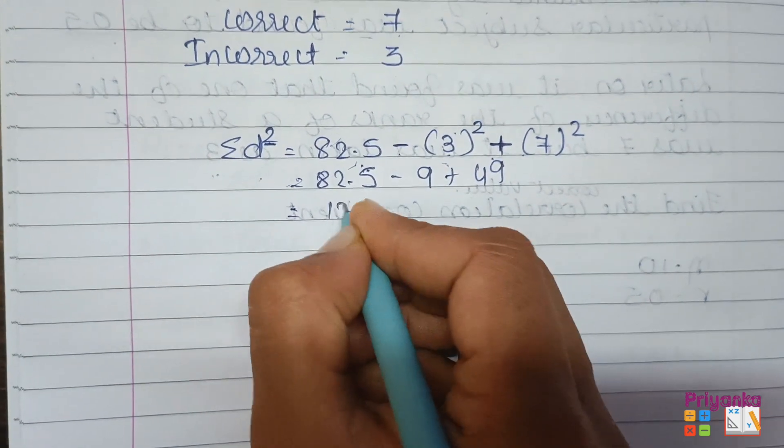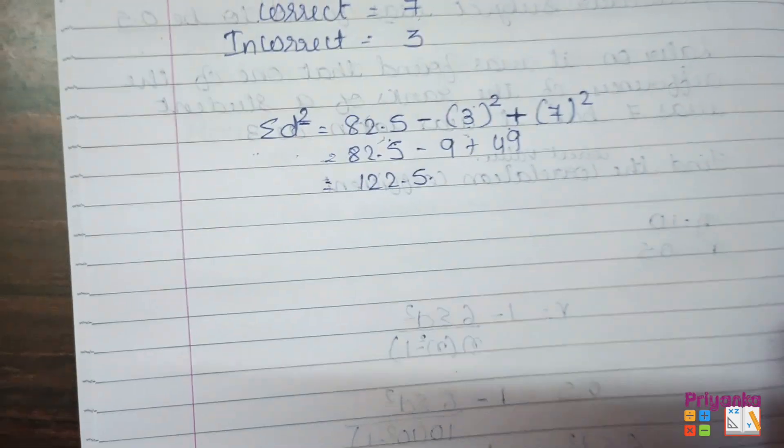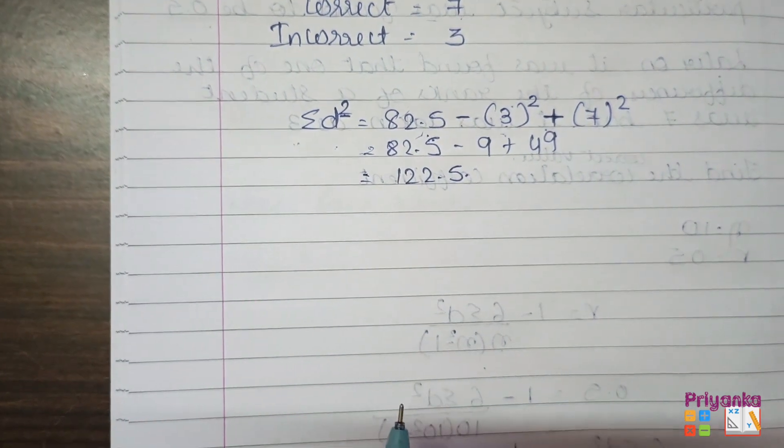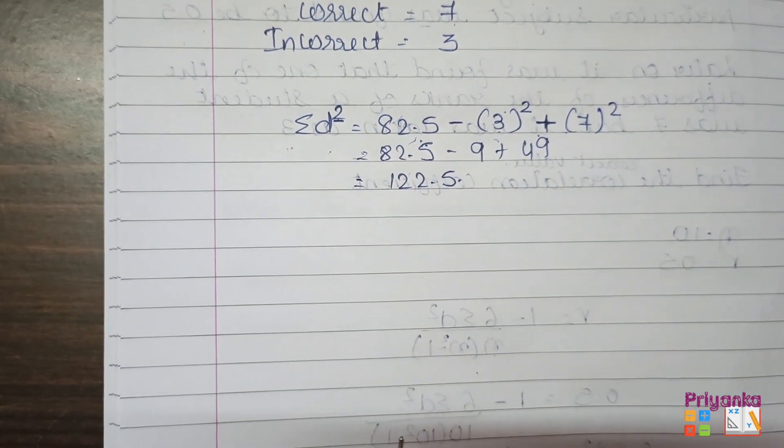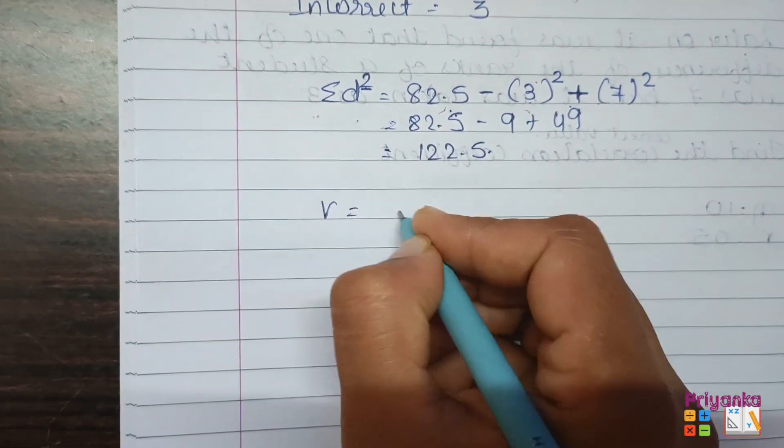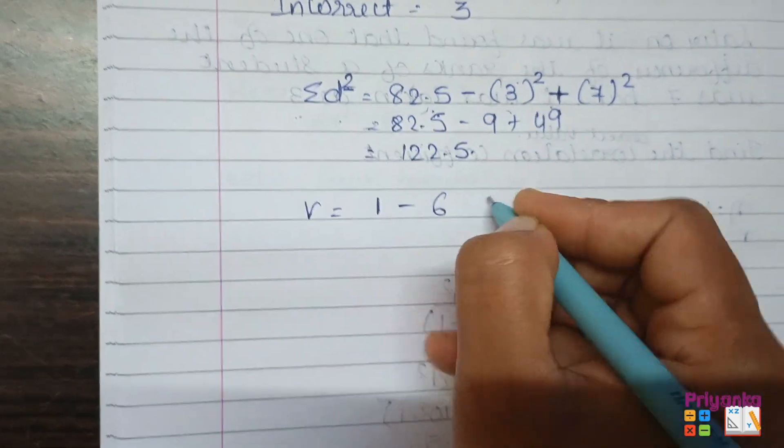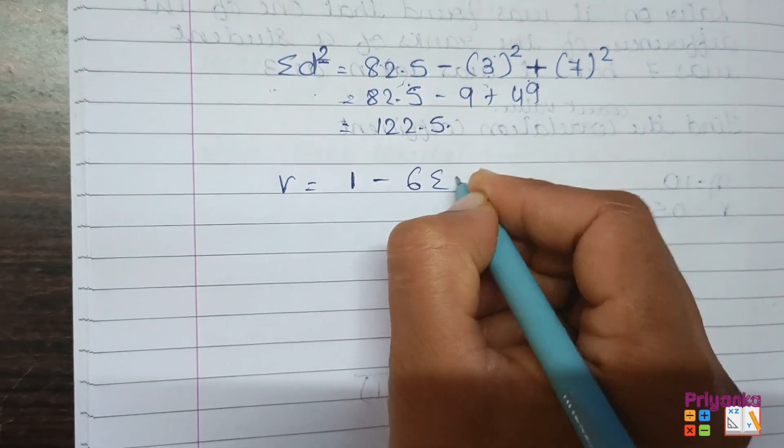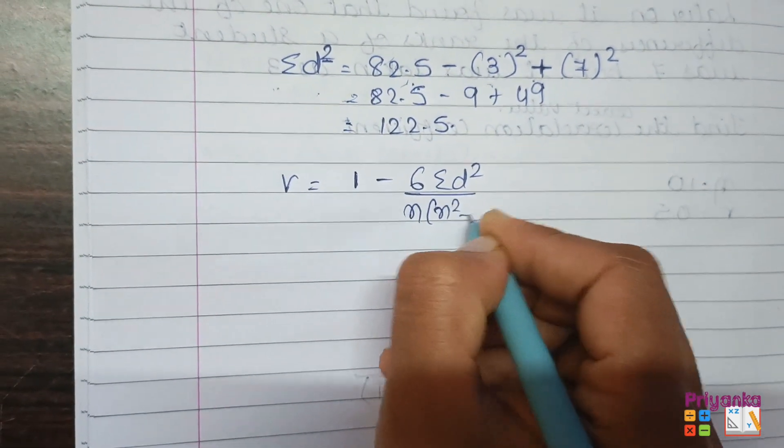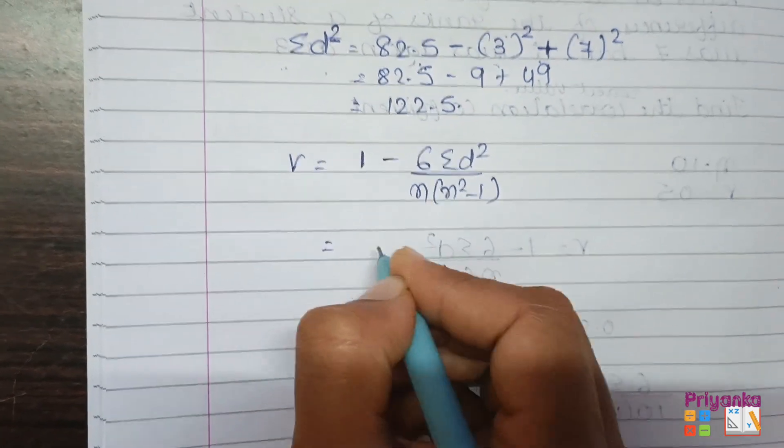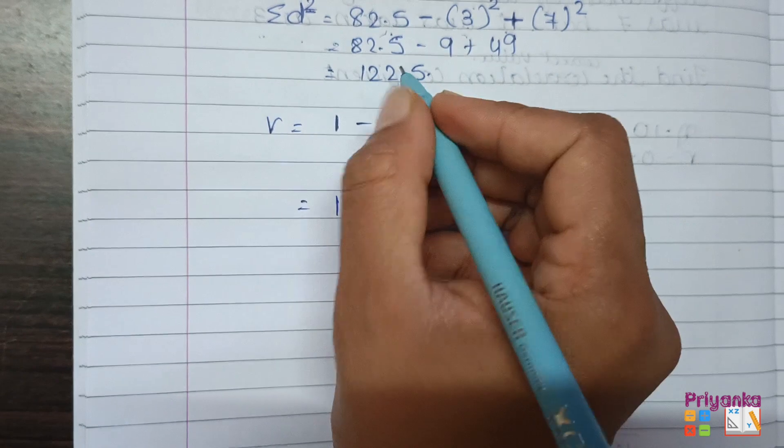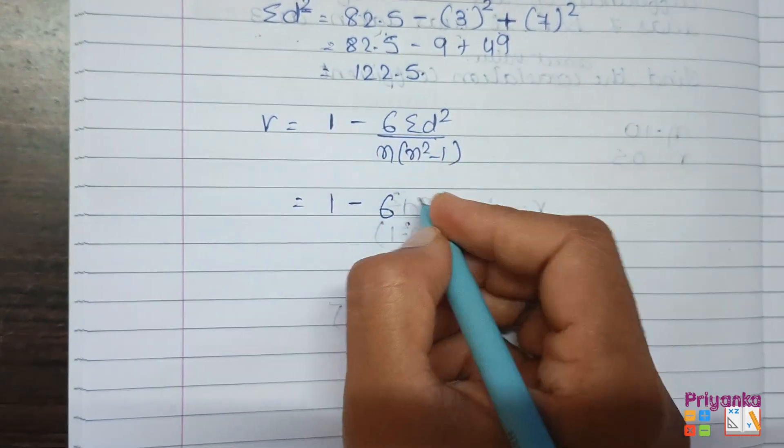So after finding this, we will again make a calculation on the corrected rank correlation coefficient. So here we will get 1 minus 6, the corrected one sigma d square upon n, n square minus 1.